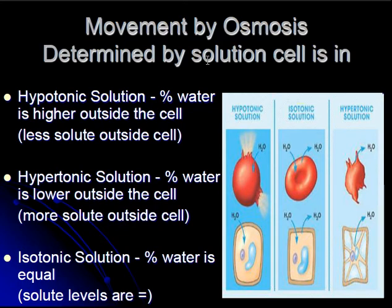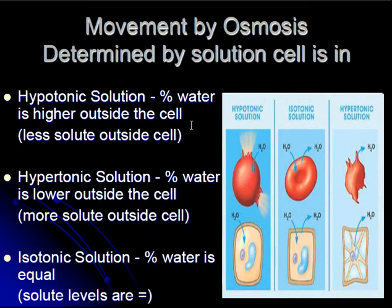Now let's discuss how the movement of water by osmosis can change the amount of water inside of cells. First, let's consider when a cell is placed into a hypotonic solution. This means that the percentage of water is higher outside the cell than inside. Hypotonic means that there's less solute outside of the cell. When cells are placed into hypotonic solutions, because the percentage of water is higher outside, it will try to move from outside of the cell to inside, causing the cell to become inflated. Animal cells may burst or rupture in this situation. Plant cells, because of the cell wall, are less likely to burst, but they will become very rigid.